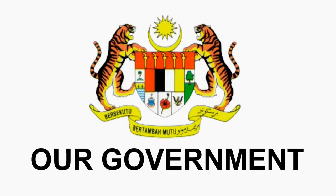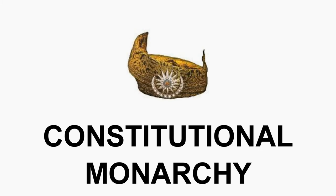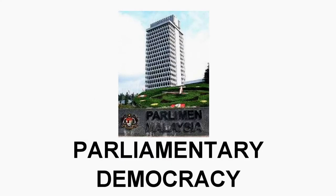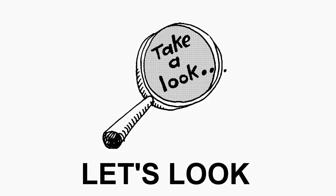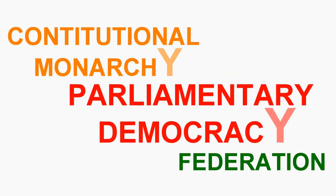Our government adopts three different types of systems. The first one is known as constitutional monarchy, the second is parliamentary democracy, and the third is federation, or some might call it federalism. Let's look one by one at what is constitutional monarchy, parliamentary democracy, and federation.